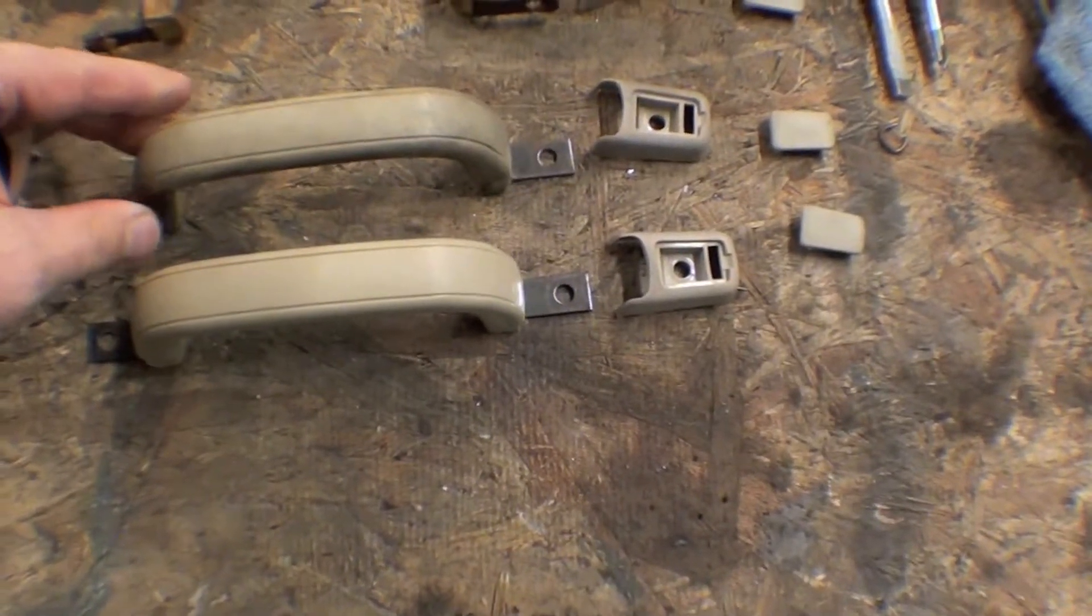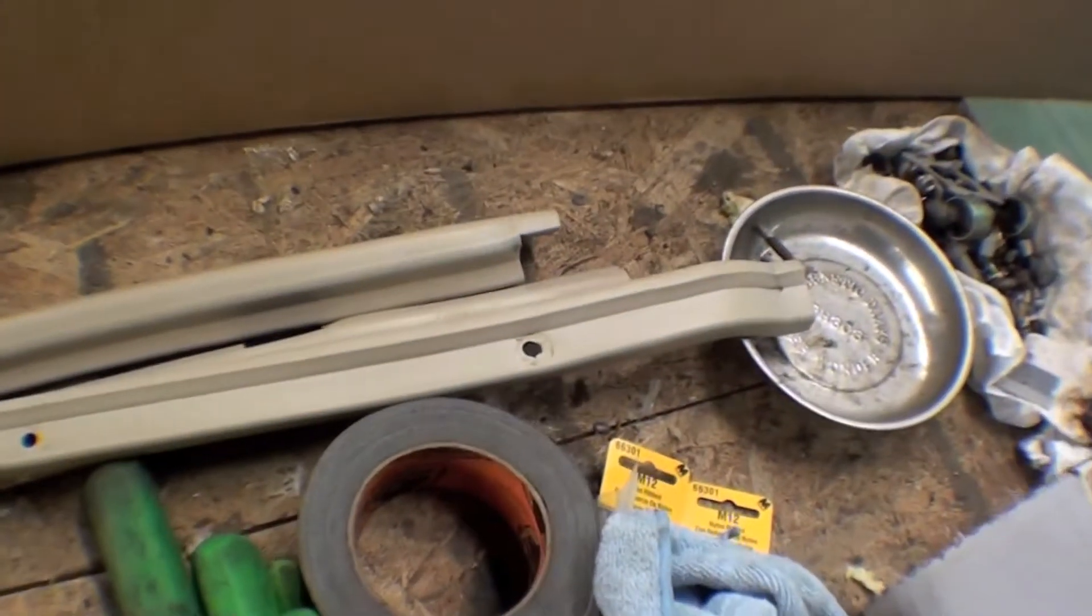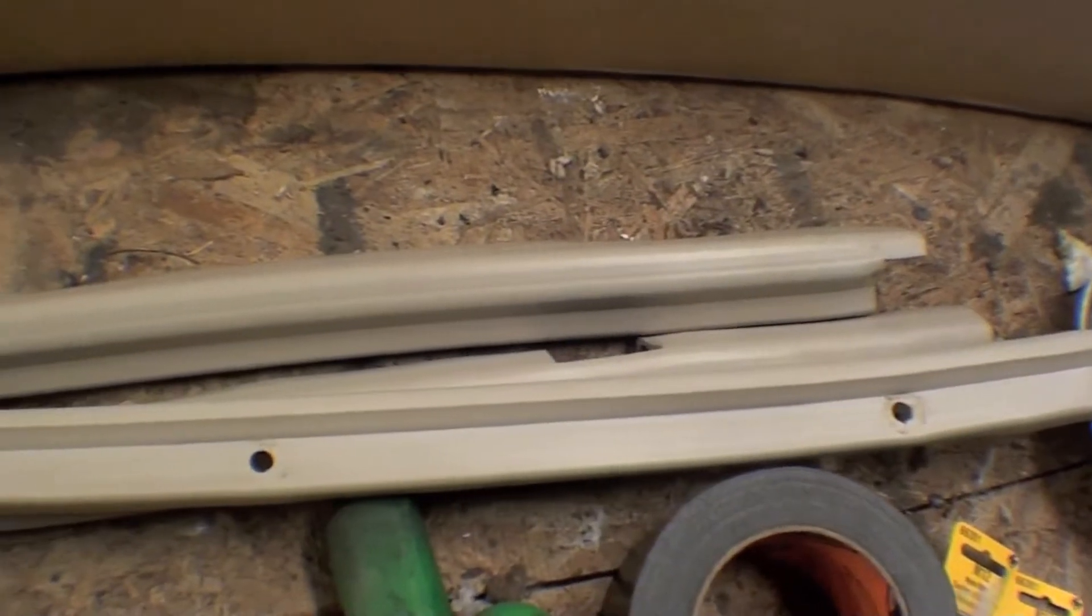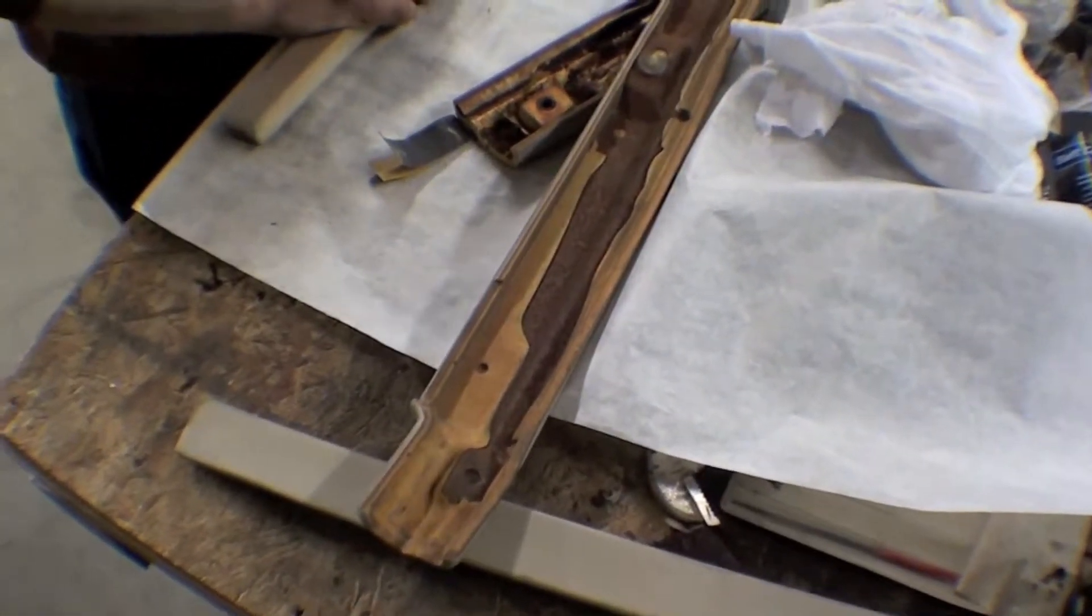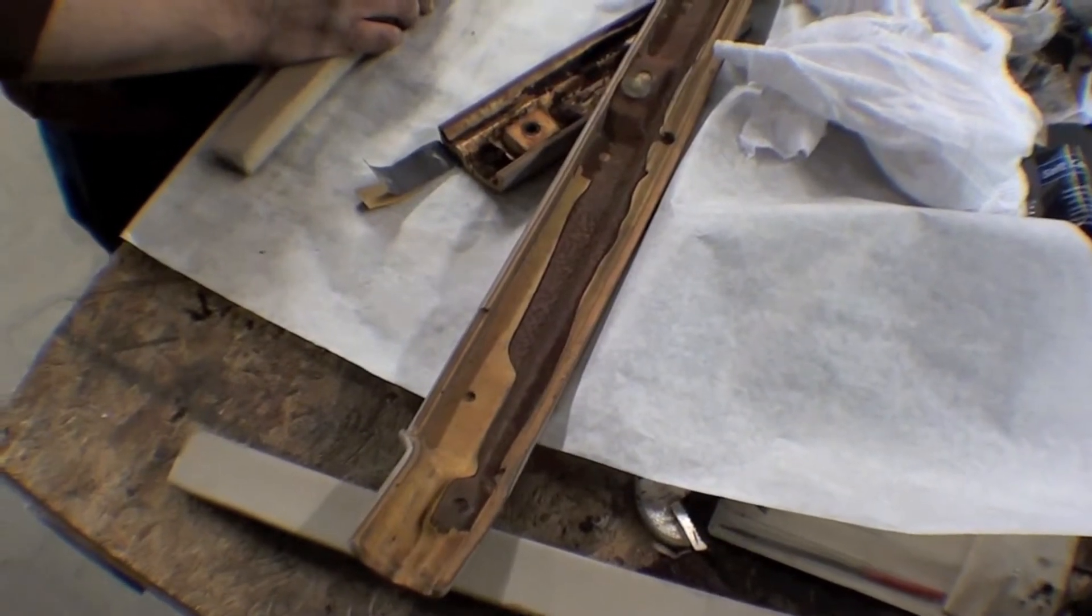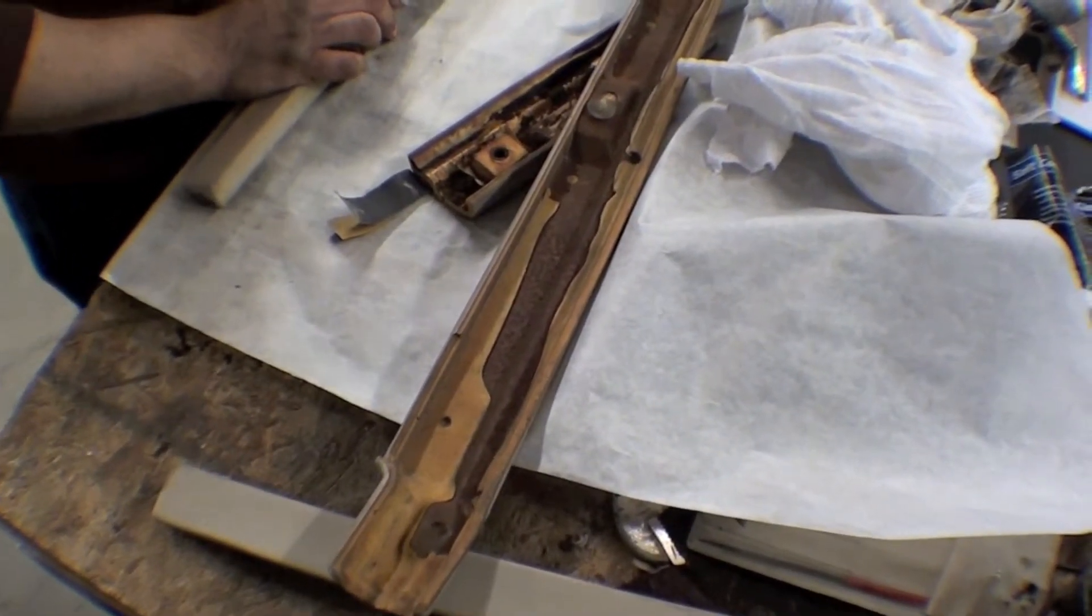Some trim pieces that go on inside around the perimeter of the hardtop, where the rain gutter is on the outside, clean up real nice. For the cleaning, we're using a thinner, just a simple paint thinner. It cleans the material off of just about anything, especially plastic, really well.